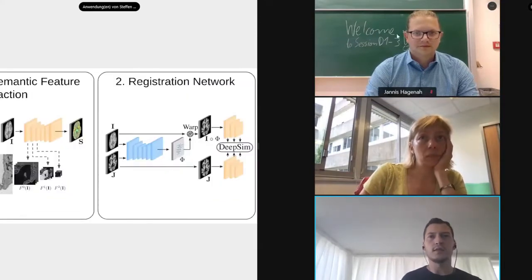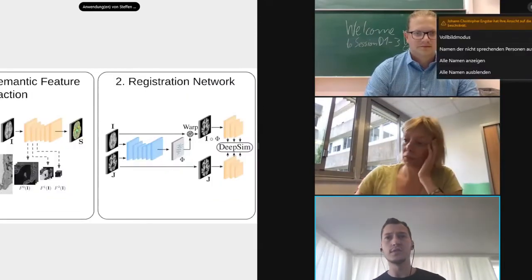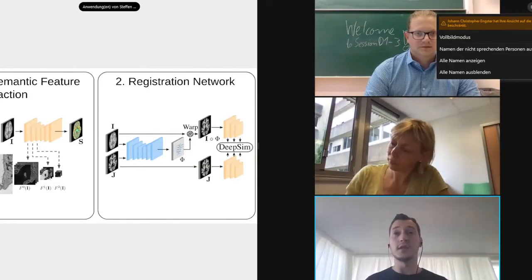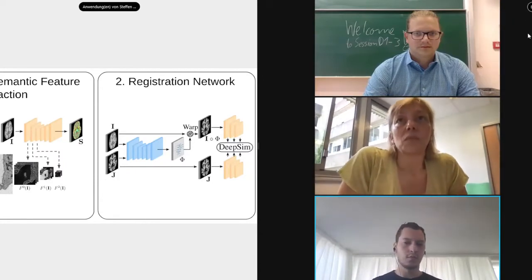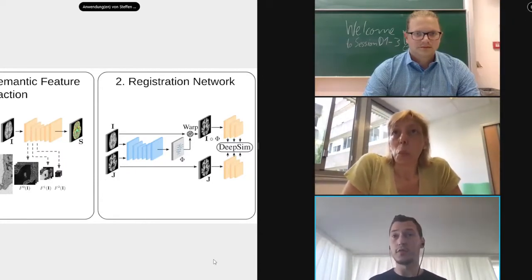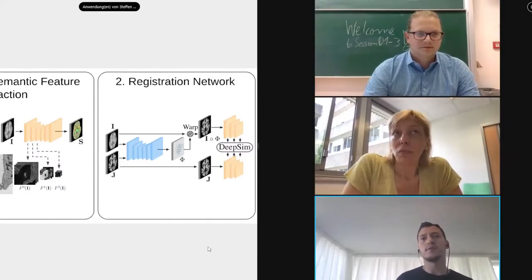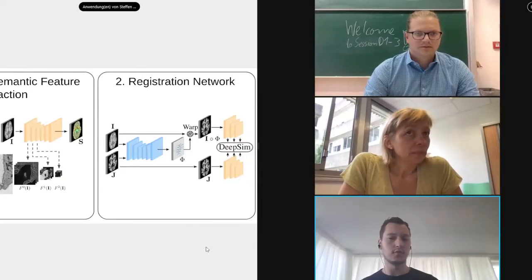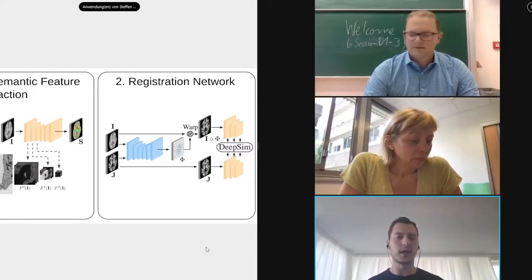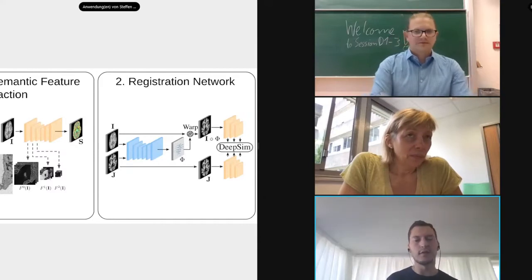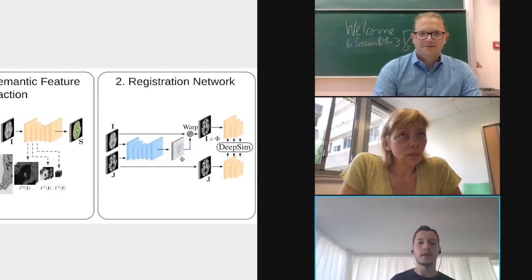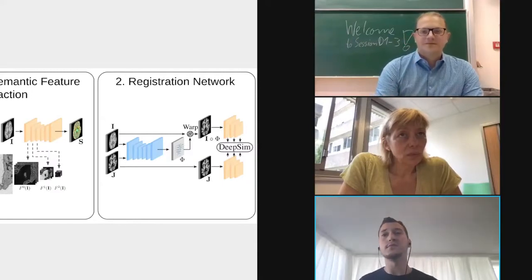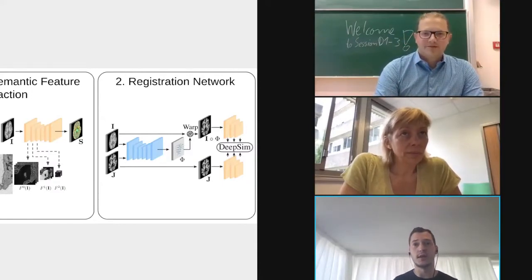In our proposed two-step method, we first train a semantic feature extraction network — a standard U-Net trained on a proxy task; we try both autoencoders and segmentation here. After training this network, we use the learned kernels to extract features of semantic importance from our images, producing a feature pyramid. We then use this to train a registration network, and we use these extracted features in the loss function to judge similarity.